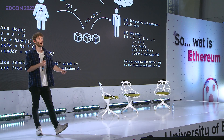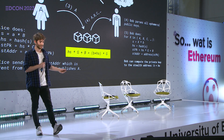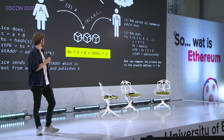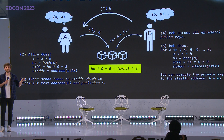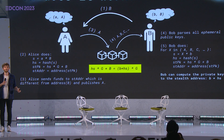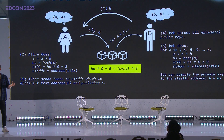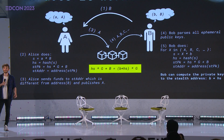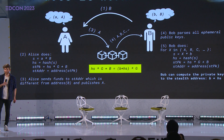For those interested in why the whole thing works, it's essentially because this equation holds true: the hashed shared secret multiplied by the generator point of the elliptic curve, plus the public key of the recipient, equals the result of first doing a simple arithmetic addition between the private key of the recipient (Bob) plus the hashed shared secret, and then multiplying the whole thing by the generator point. This is the mathematical background of how the whole thing works.